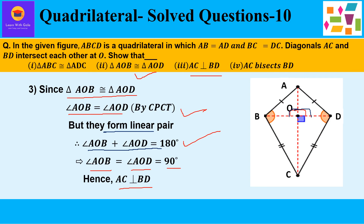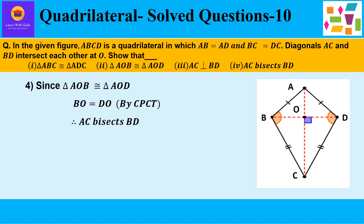Now let us take up the fourth part, where we have to prove that diagonal AC bisects diagonal BD, meaning it divides BD into two equal halves, so we have to prove BO is equal to DO. Since triangle AOB is congruent to triangle AOD, which we already proved in the second part, BO is equal to DO by CPCT — corresponding parts of congruent triangles are equal. Hence, AC bisects BD, dividing it into two equal halves.